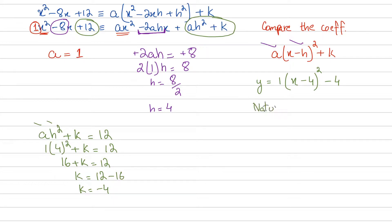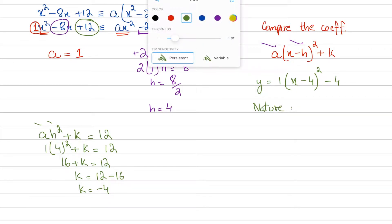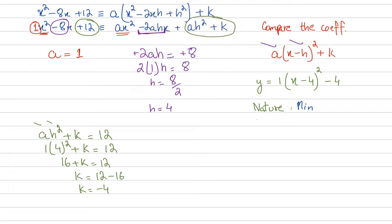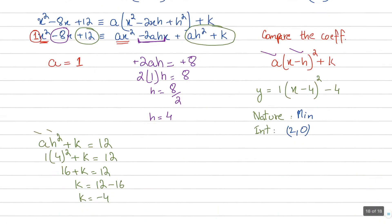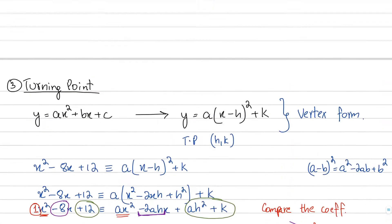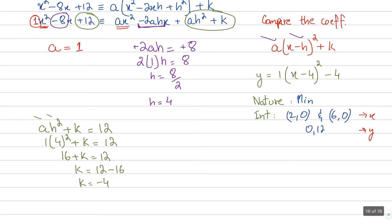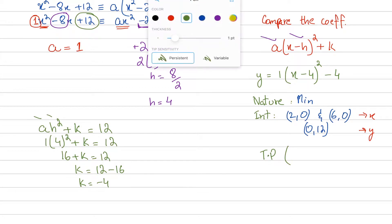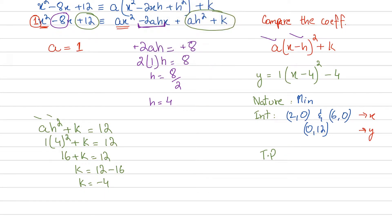To summarize: the nature is minimum. The x-intercepts are (2, 0) and (6, 0). The y-intercept is (0, 12). And the turning point is (4, negative 4).